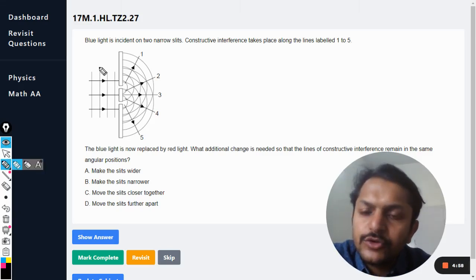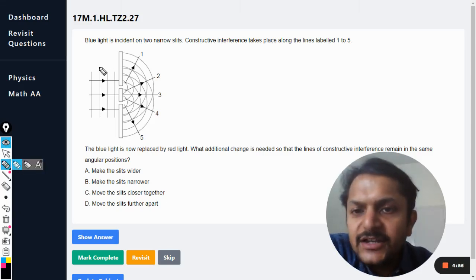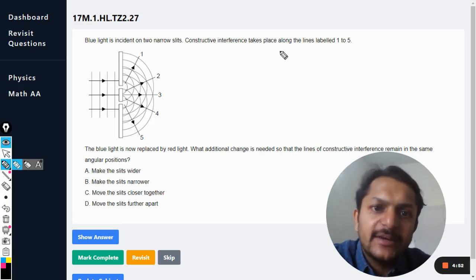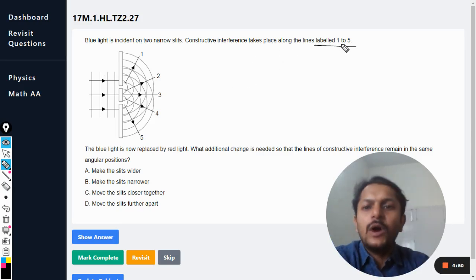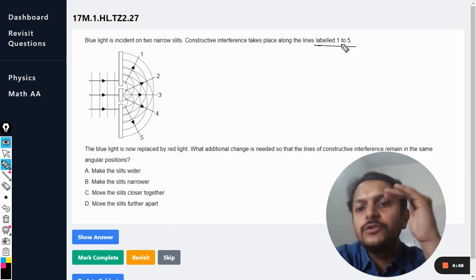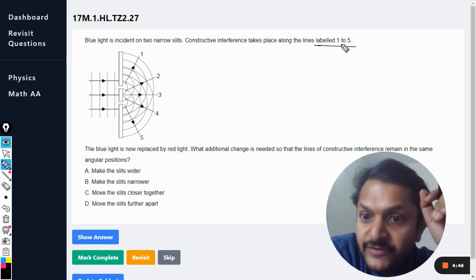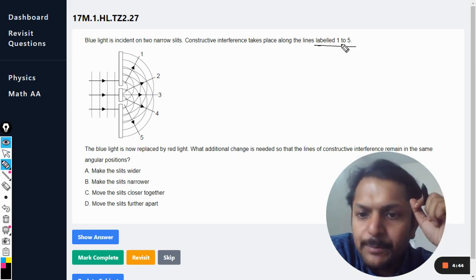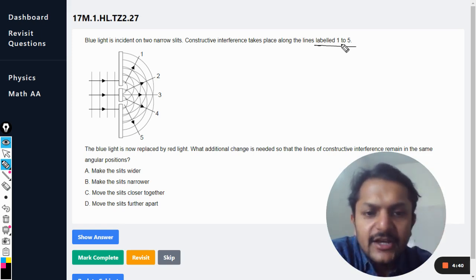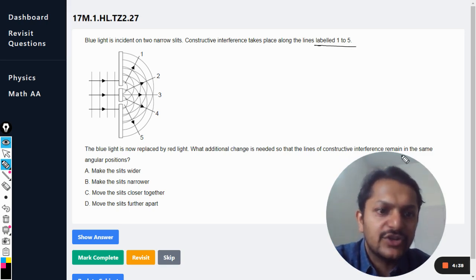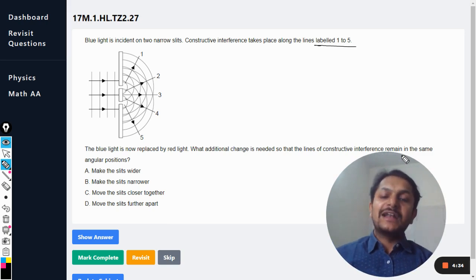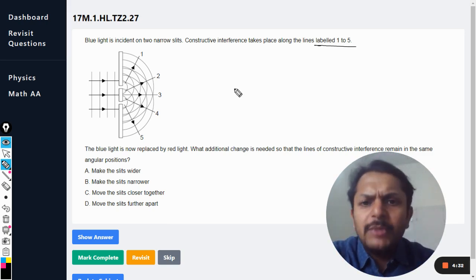Okay dear students, let us see what is there in this question. Blue light is incident on two narrow slits. Constructive interference takes place along the lines labeled one, two, three, four, five. All are constructive interference. The blue light is now replaced by red light. What additional change is needed so that the lines of constructive interference remain in the same angular position? It means that theta should not change.